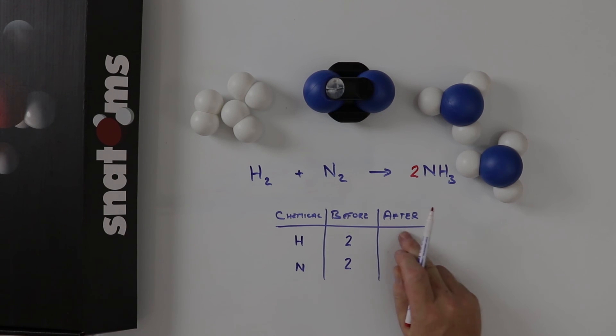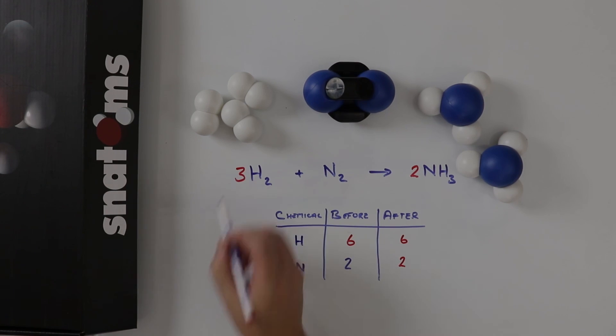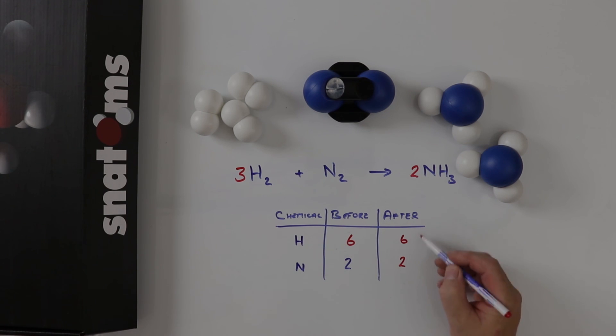If I've got six hydrogens after, then I need to have six hydrogens before. Six is going to be two times something makes six. Two times three is six. And we have the same number here before and after. The same number here before and after. So the equation is balanced.